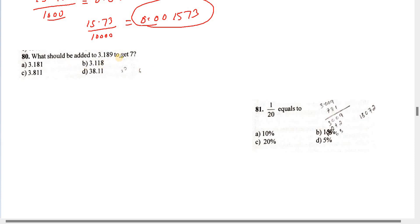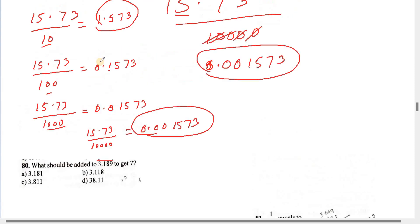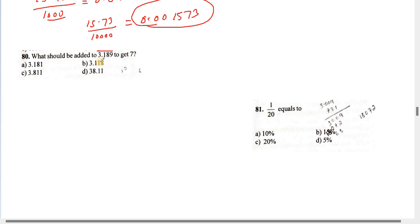What should be added to 3.189 to get 7? This is 3.1789. I'm going to switch the numbers. It is already a video — this is how we should switch it. Here's how much we should switch it. If you want to switch, it's different. You can switch it.